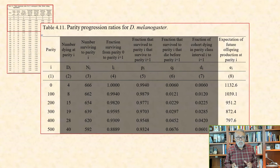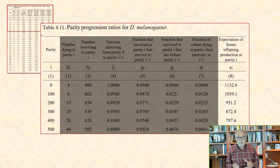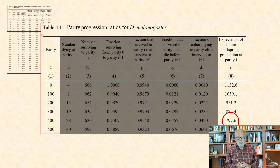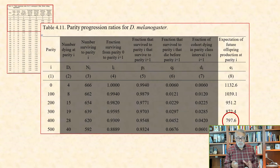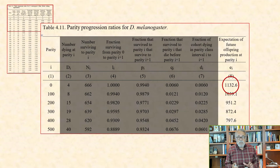The last column, column 8, contains the expectation of future offspring production at parity i. For example, for parity 400 flies — that is, all flies that laid at least 400 eggs — the expectation of future egg production was 797.6 more eggs. The expectation of future reproduction at parity 0, which is 1,136.2 eggs, equals the net reproductive rate for this cohort, i.e., the average number of eggs laid by a newborn female.